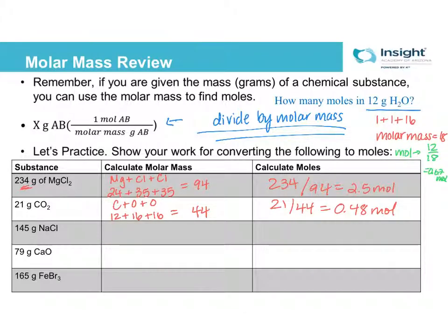Doing one more. So NaCl, I need to add sodium plus chlorine, because there's one of each. Sodium is 23, chlorine is 35, which is going to give me 58. So I'll take the 145, divide it by 58. And that gives me 2.5 moles.